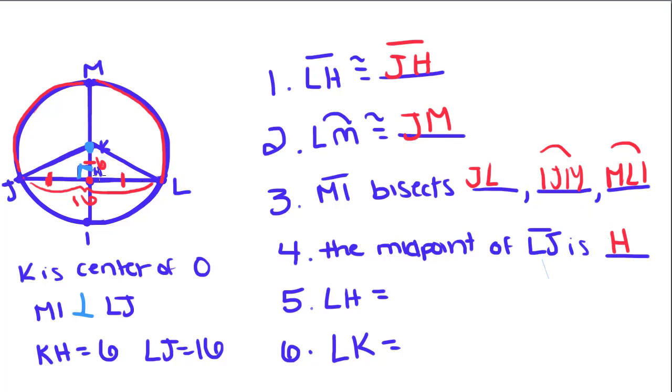LH, right here, equals what? Well, since we know that LJ is 16 and that H is the midpoint of LJ, we can just divide 16 divided by 2 and you'll get 8 if you do that. So that each one of these pieces has to be 8 centimeters. So LH is 8 centimeters and JH is also 8 centimeters.